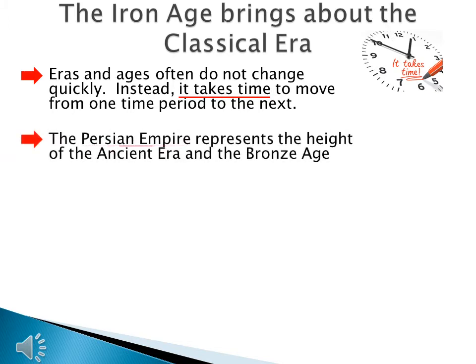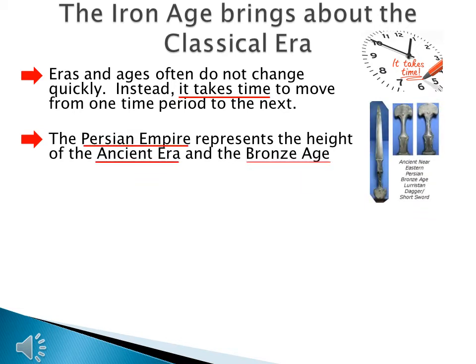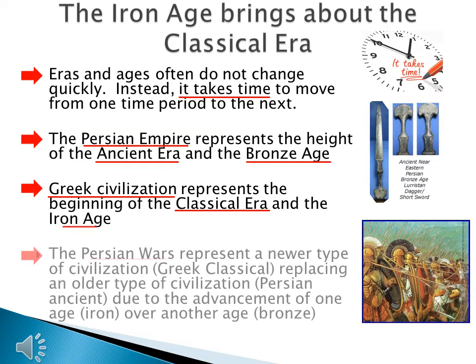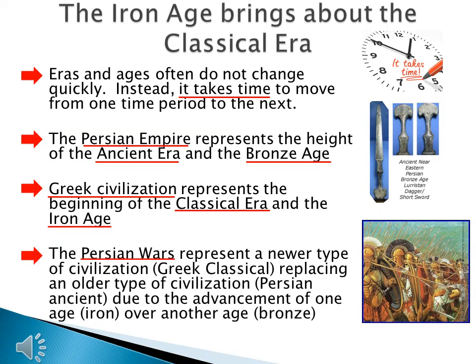High tide here is the Persian Empire, which represents the height of the ancient era and the Bronze Age. But the new tide is Greek civilization, which represents the beginning of the classical era and the Iron Age. The Persian Wars represent a newer type of civilization — Greek classical — replacing an older type of civilization — Persian ancient — due to the advancement of one age, iron, over another age, bronze. The Greeks have better technology; they're using a stronger metal, and in the end, it's going to help them.